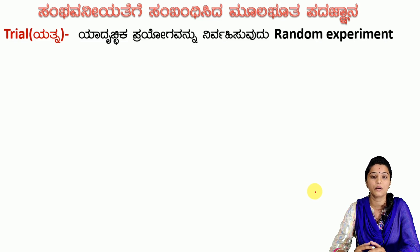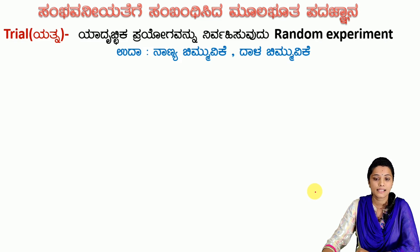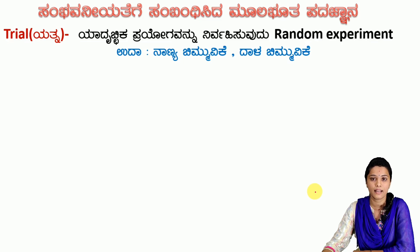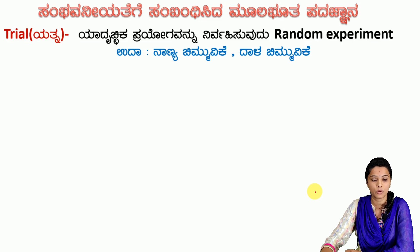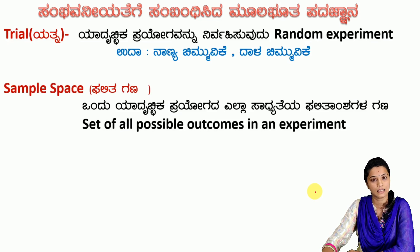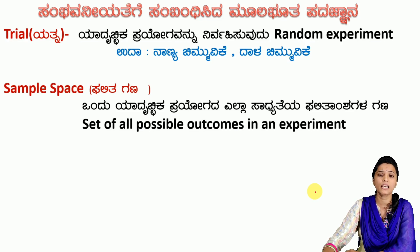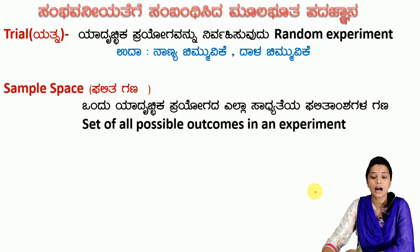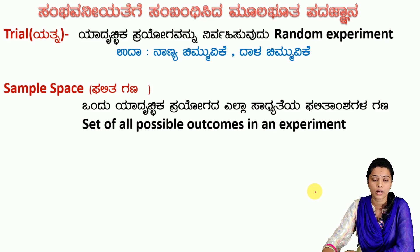To find out the probability, we will use a trial. If you have a coin, you toss it — that is called a trial. Next, sample space. The sample space is the set of all possible outcomes. We are going to define sample space for each experiment.